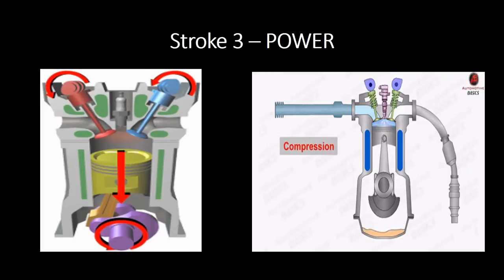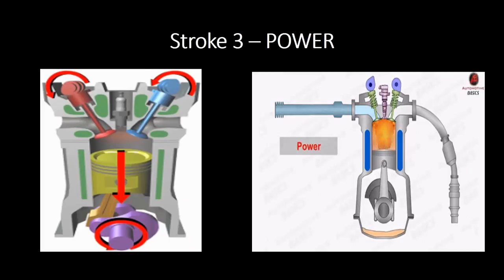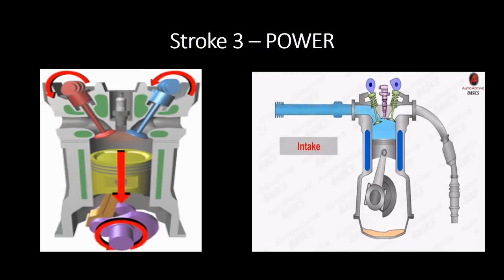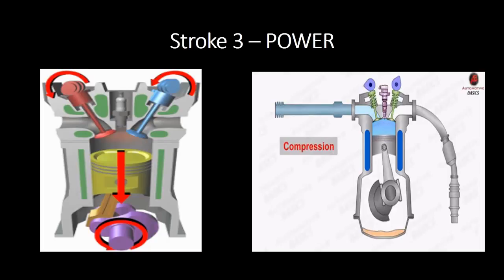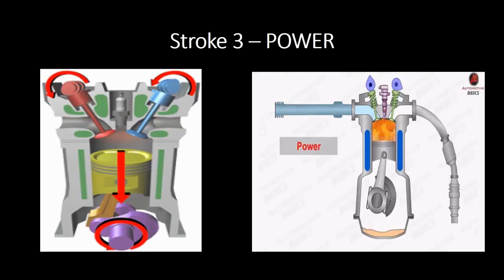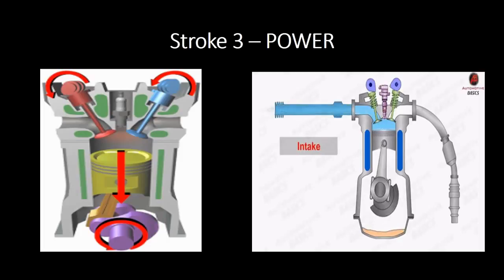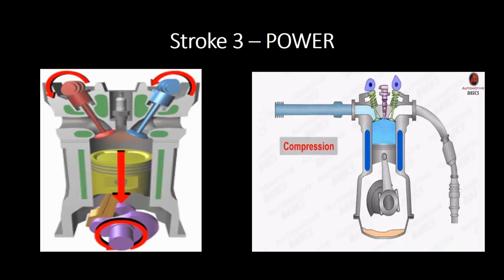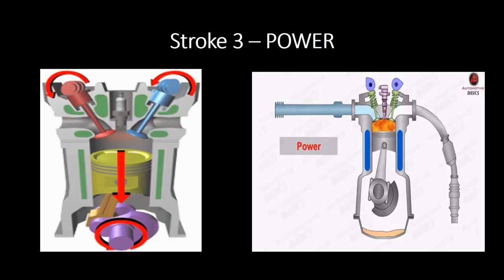The power stroke starts with the piston at TDC, with both intake and exhaust valves still closed. The air-fuel mixture combustion, which started at the end of the compression stroke, causes a significant increase in pressure inside the cylinder. This pressure pushes the piston down towards BDC. Only during the power stroke does the engine produce energy.